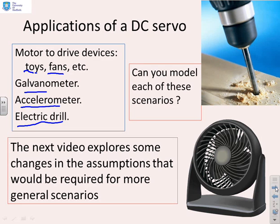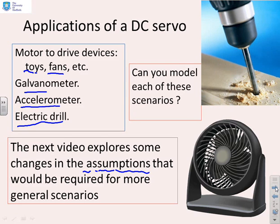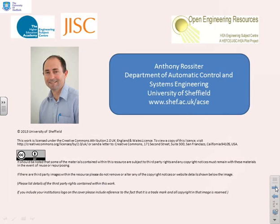What we're going to do in the next video is explore what would happen if we changed some of the assumptions used in this DC servo model, because we did make very explicit assumptions, and in practice you might want to change those slightly. We'll explore briefly how the modelling changes if you change some of those assumptions, and we'll see you in the next video.